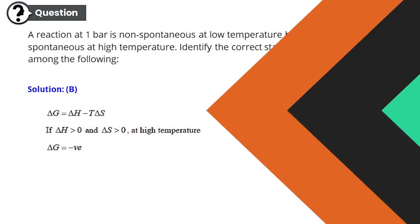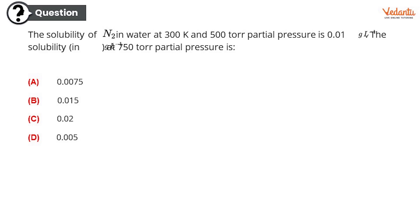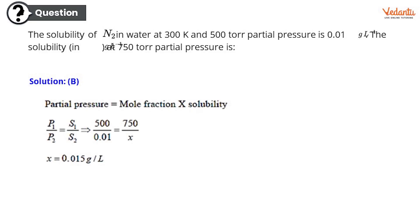So here goes the next question. The solubility of N2 in water at 300 Kelvin and 500 Torr partial pressure is 0.01. The solubility in this unit at 750 Torr partial pressure is, what is the correct response? Is it 0.0075, 0.015, 0.02 or 0.005? So the correct answer is B, 0.015. And the explanation to this question is, this is the complete solution which has been done for you guys.